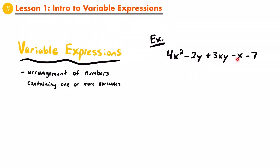Here I have a variable expression that includes an arrangement of numbers and letters, which we would call variables. In this case, there are two different variables in this variable expression — you can see that there are some x's and some y's. Notice within this variable expression that just like regular numbers, variables can be multiplied, added, and subtracted from other numbers and even other variables. Any operation that you can perform on a regular number, you could also perform on a variable.